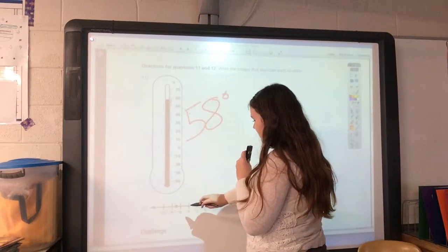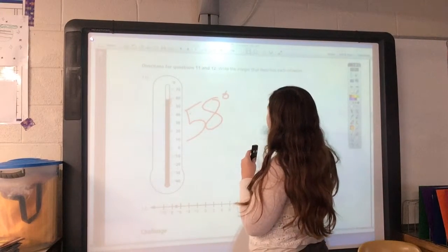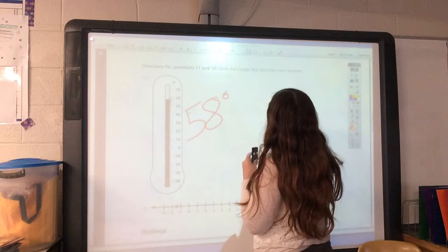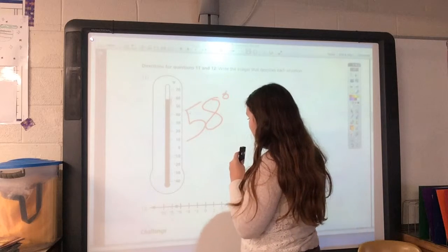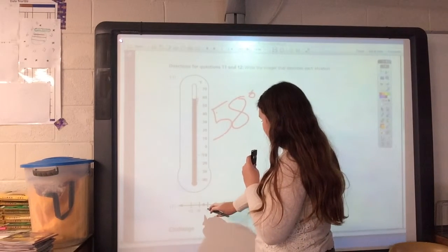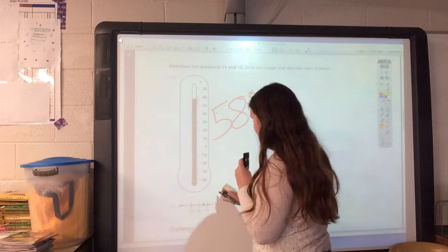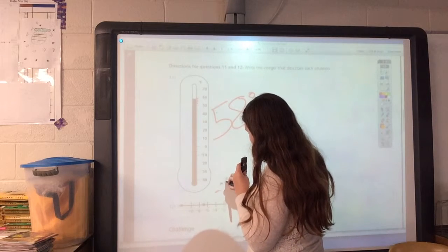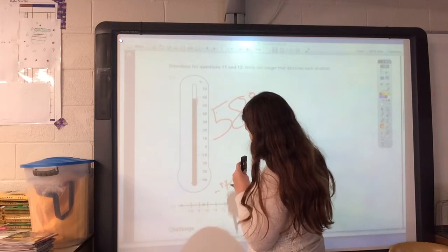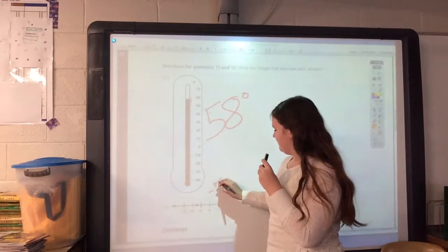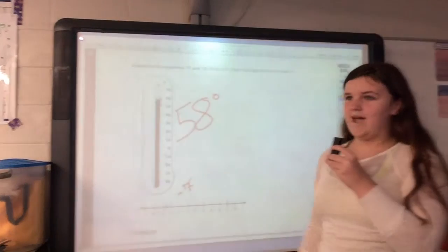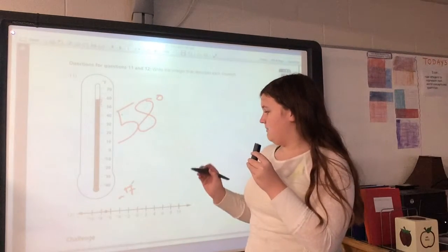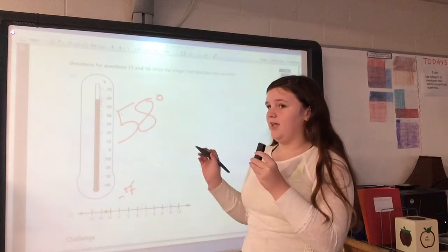Okay, so number 12. The direction says write the integer that describes each situation, and the point is between negative 6 and negative 8, so I know that means negative 7. My math practice is number 5, math toolkit: number line.